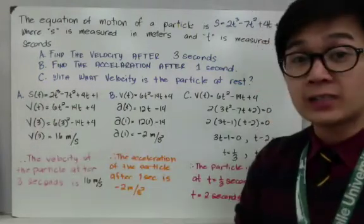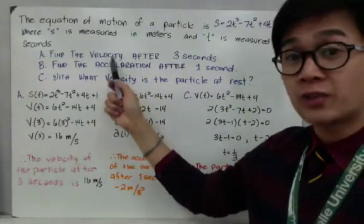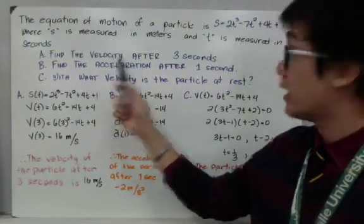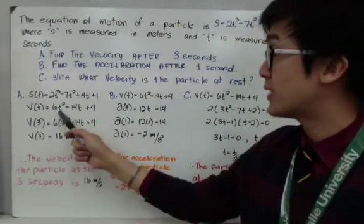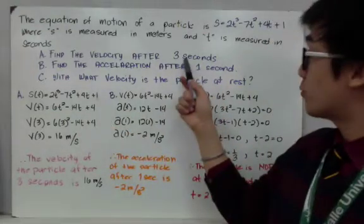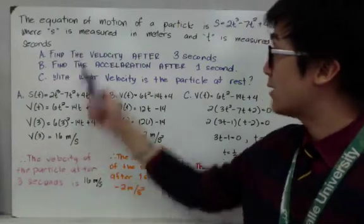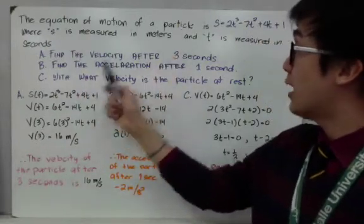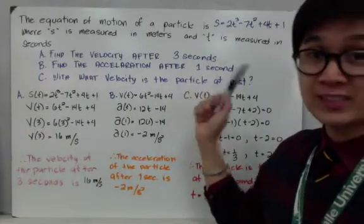So for letter A, it's pretty simple because we just need to find the velocity, and we know that to find the velocity, we take the derivative of our function. So we have the derivative for our function, which gives us 6t squared minus 14t plus 4, and plugging in the value of 3, we verify that this particular particle has a velocity of 16 meters per second after 3 seconds.